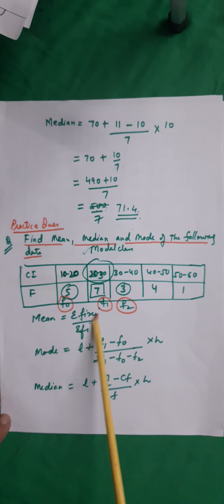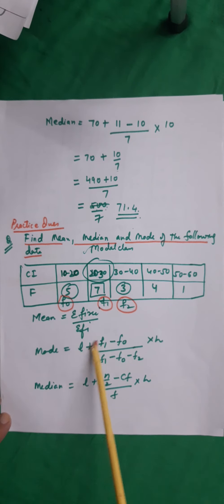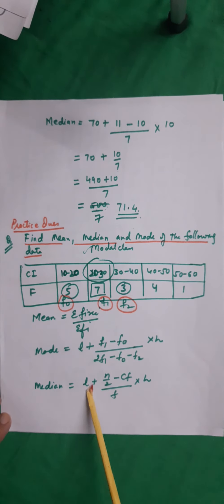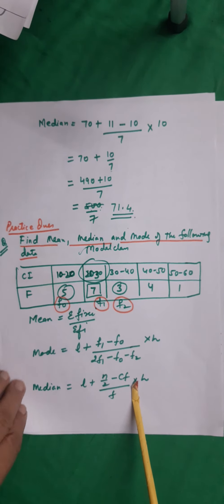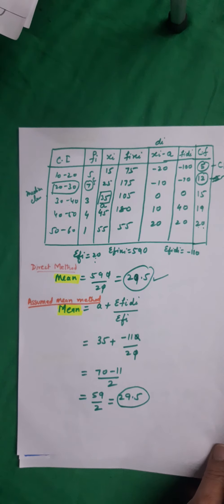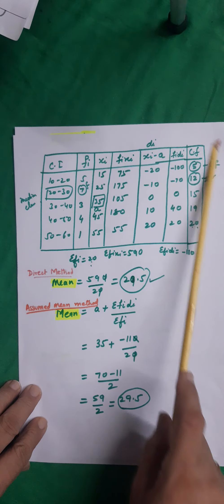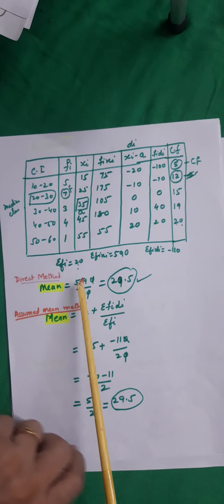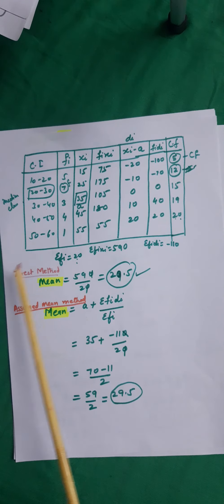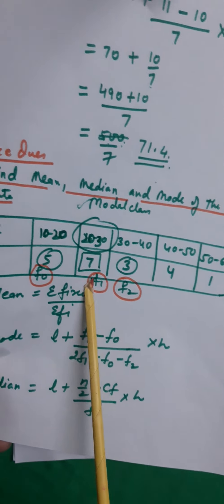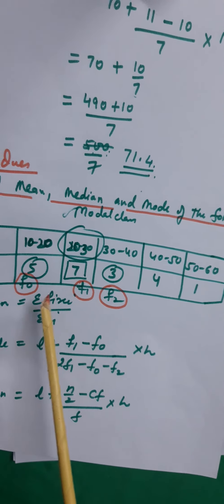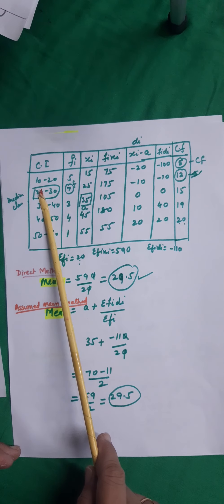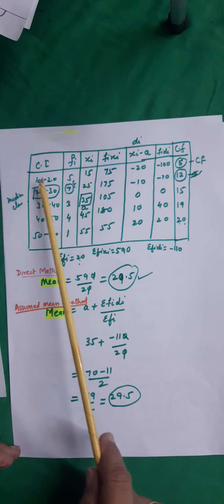Mean equals sigma(FI·XI) upon sigma(FI). We create a table with class intervals, frequencies FI, mid-values XI, and FI·XI columns. XI is the mid-value of each class interval.